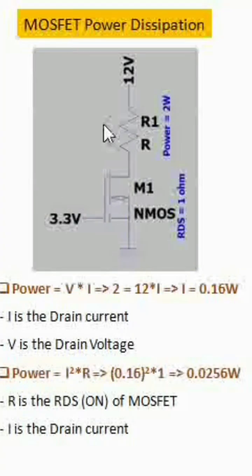Let us calculate the MOSFET power dissipation in a switch operation. There is a simple circuit where a 12-volt source is provided to the drain terminal, and a load is connected in between which has a power requirement of 2 watts. Then there is an NMOS which is provided the required gate voltage for it to turn on, and the RDS(ON) of this is 1 ohm.